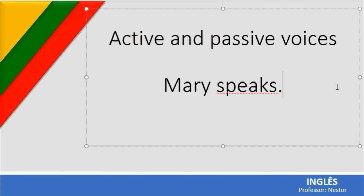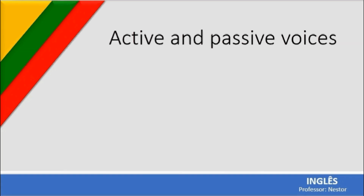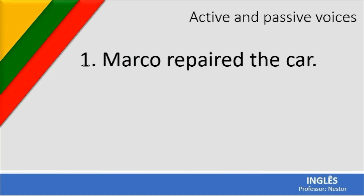Active voice is when the subject of the sentence performs an action. Passive voice is when the subject does not perform the action — the passive subject receives the action. For example: 'Marco repaired the car.' Here Marco is the subject; he performed the action 'repair the car.' This sentence is in the active voice.